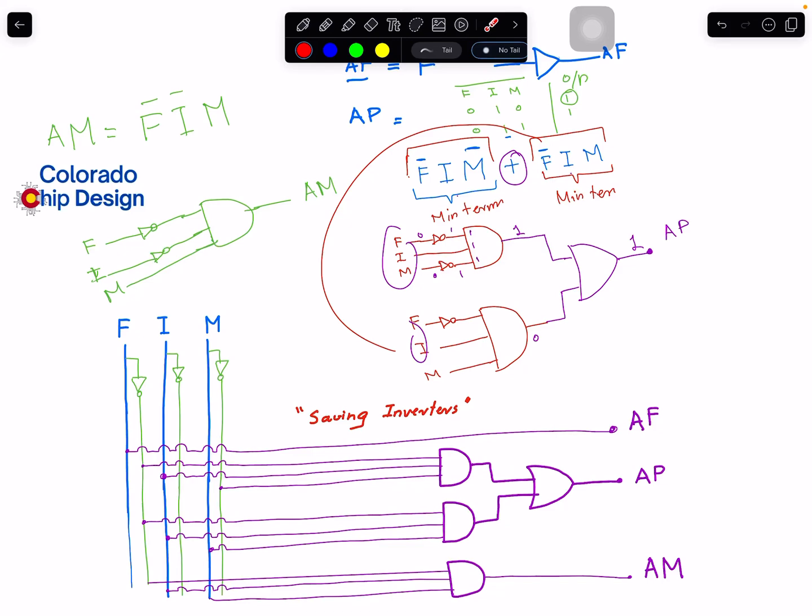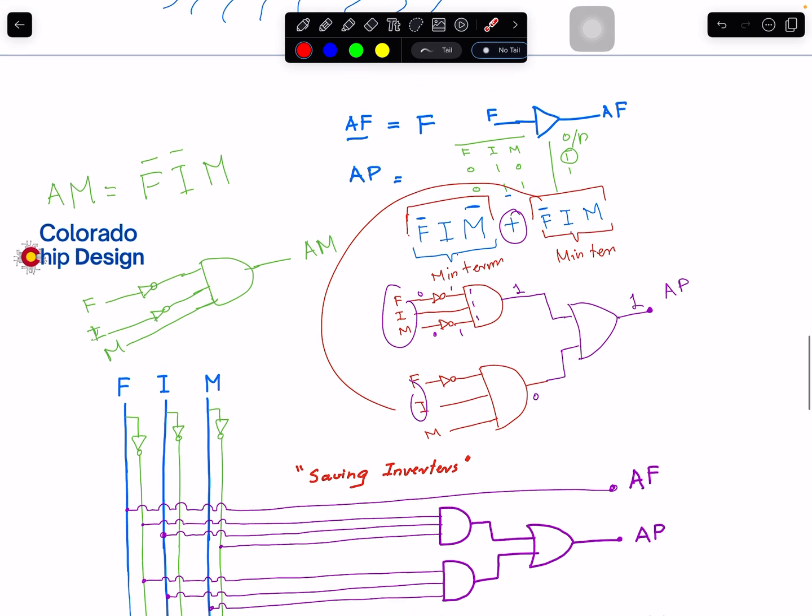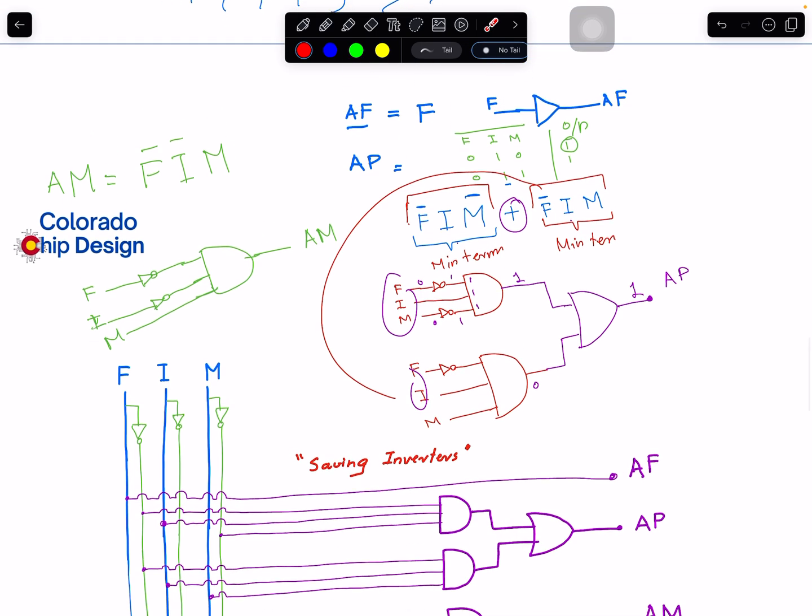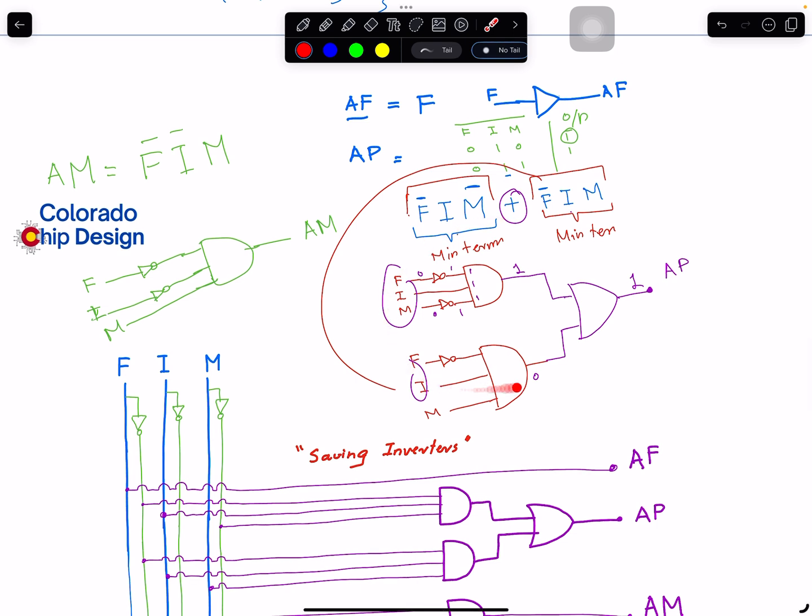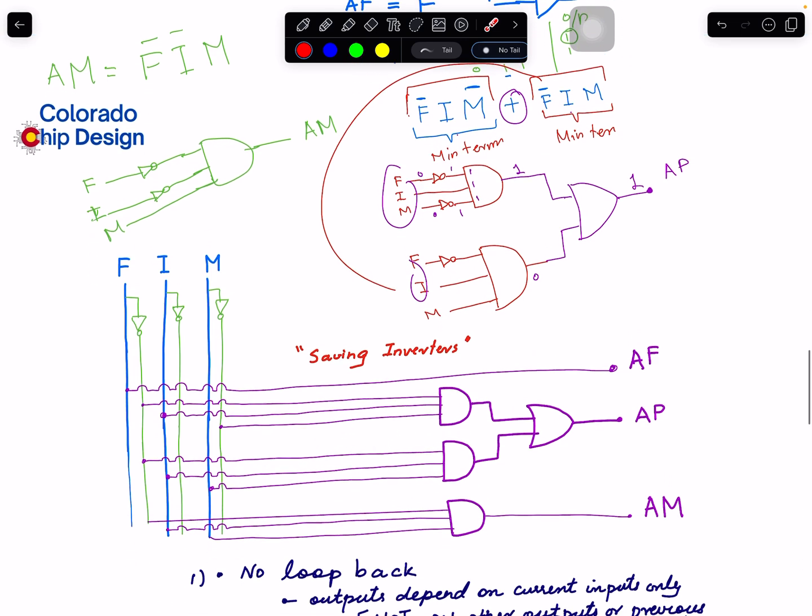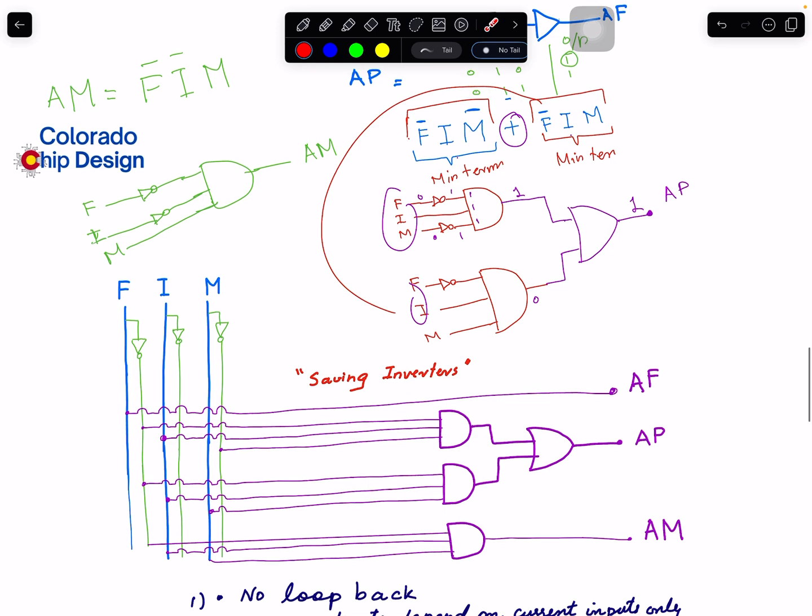Welcome to another video. In the last video we left over this circuit. So we calculated AP, AM, and AF was simply coming from input. So let me redraw that in a clean way.